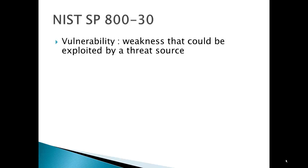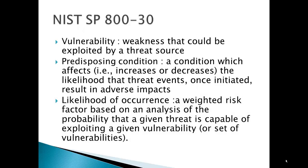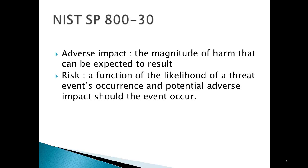A vulnerability is a weakness that could be exploited by a threat source. A predisposing condition is a condition which affects the likelihood that threat events will result in adverse impacts. The likelihood of occurrence is a weighted risk factor based on an analysis of the probability that a given threat is capable of exploiting a vulnerability or set of vulnerabilities. Adverse impact is the magnitude of harm that can be expected to result. Risk is a function of the likelihood of a threat event occurring and the potential adverse impact should the event occur — likelihood and potential adverse impact combined together equals risk.